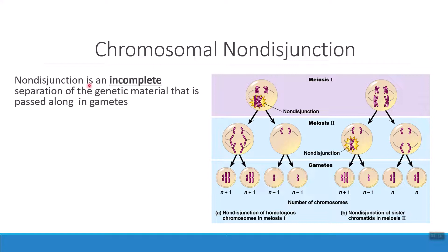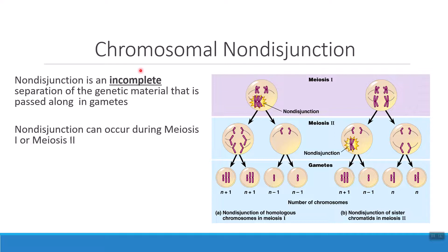When we talk about non-disjunction, what we're discussing is the process of dividing up the genetic information through meiosis. When we have non-disjunction, some amount of genetic information was not completely divided from each other. So we can have non-disjunction either in meiosis 1, the first round of division, or in meiosis 2, the second round of division.